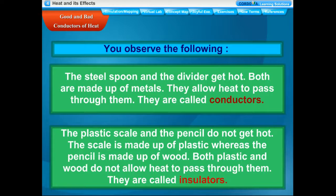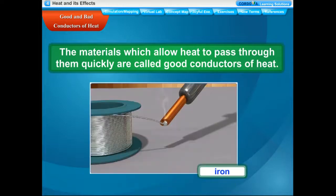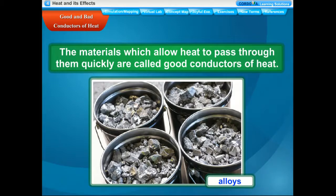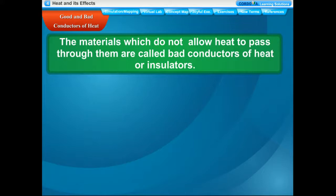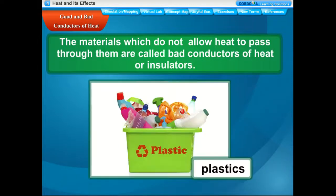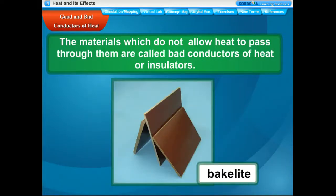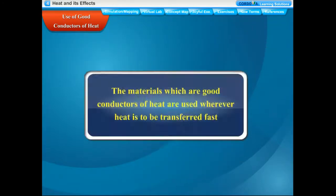Materials which allow heat to pass through them quickly are called good conductors of heat. All metals like silver, copper, aluminium, iron, and alloys like brass and stainless steel are good conductors of heat. Materials which do not allow heat to pass through them are called bad conductors of heat or insulators. Paper, wood, leather, clothes, asbestos, bricks, mud, rubber, plastics, glass, bakelite, etc. are bad conductors of heat. Pure air and water are also bad conductors of heat.